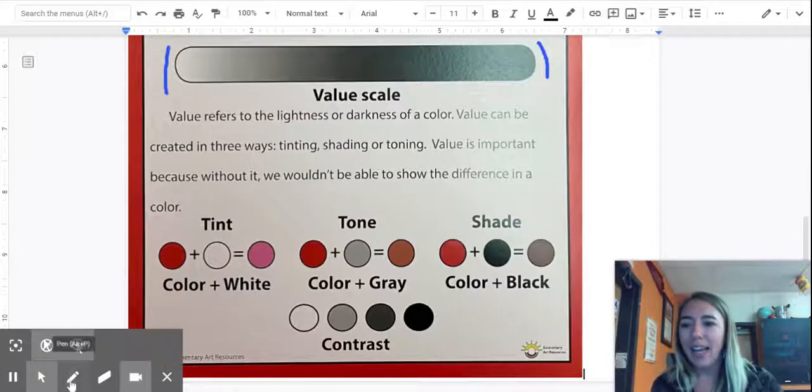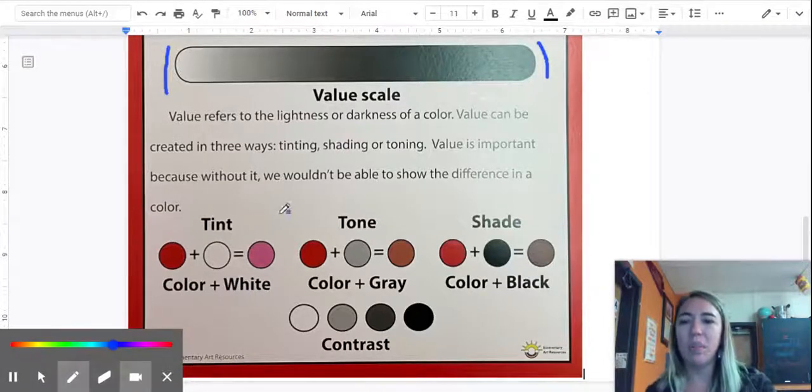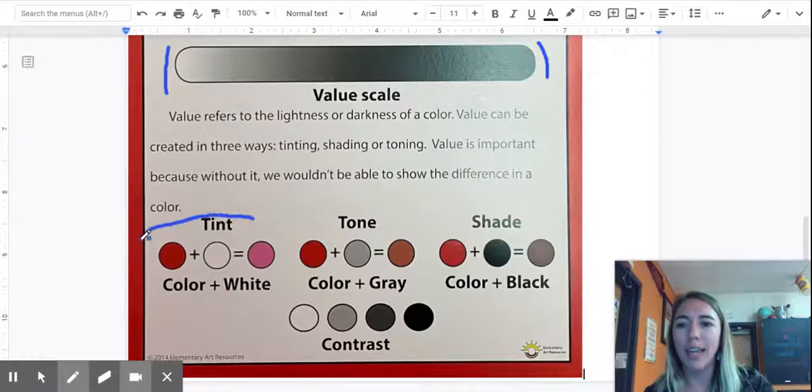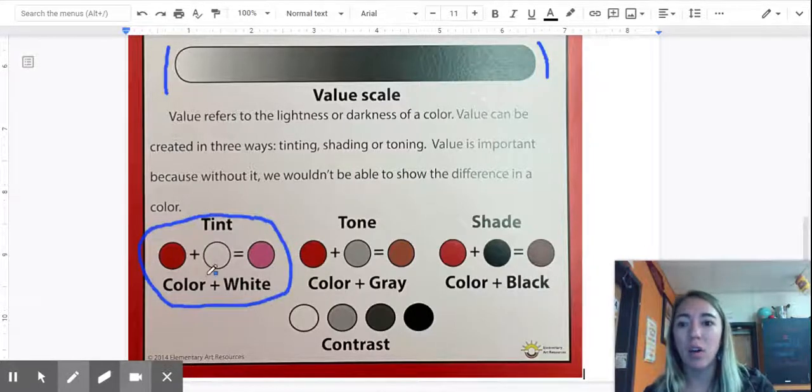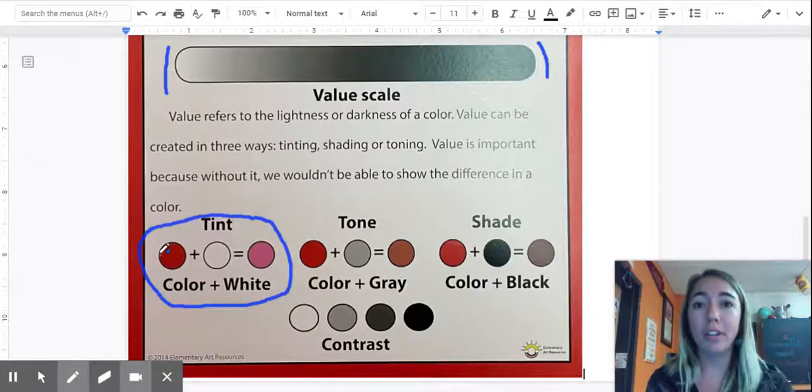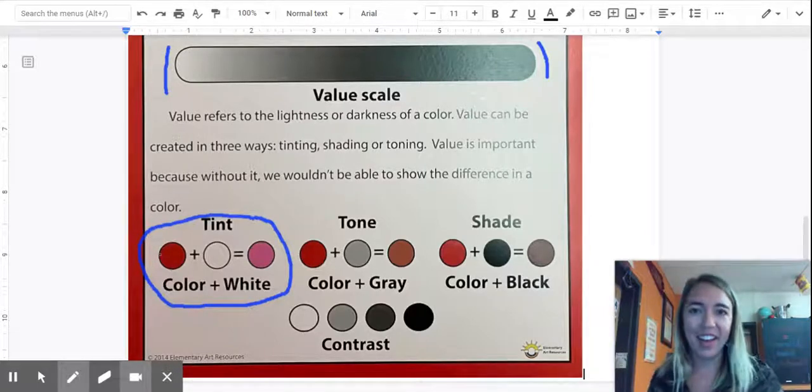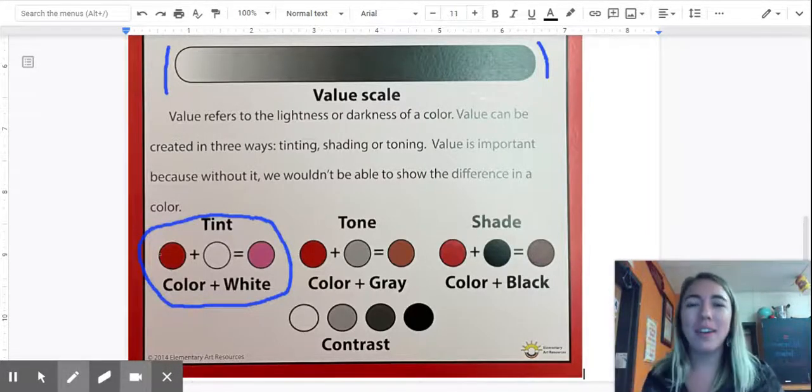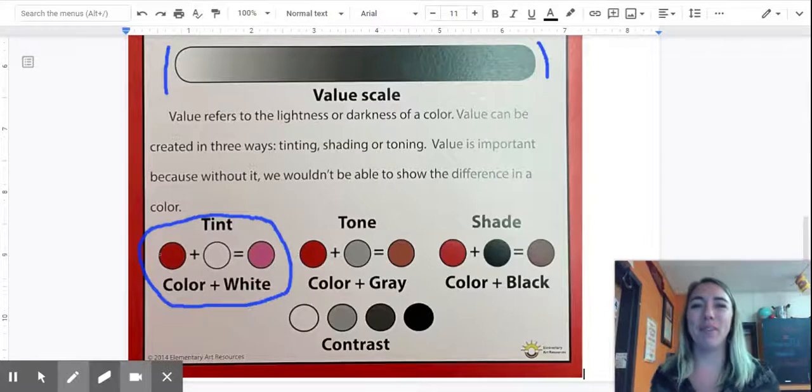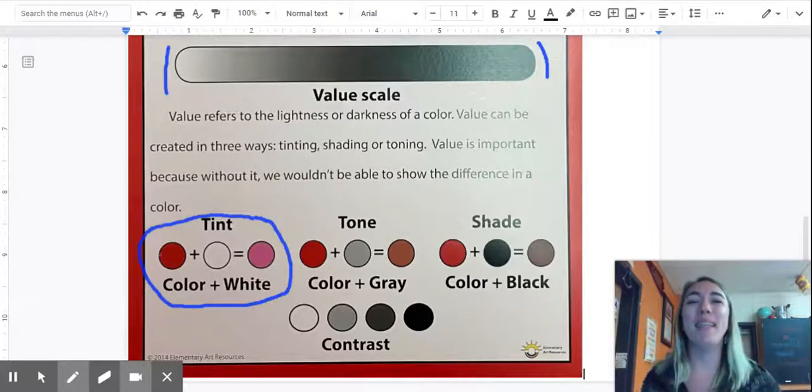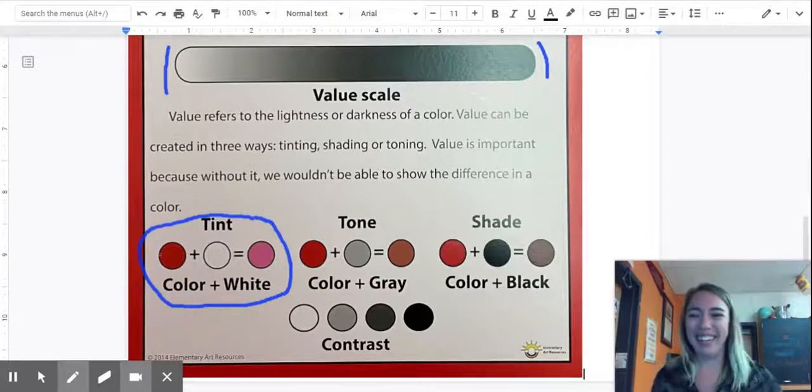So in my next video, I'm going to show you more ways that we can create tints. But the most important thing is that we take a color or a hue. When you hear the word hue, it's just a fancy way of saying color. So hue means color. Do it with me. Hue means color. Okay, good.